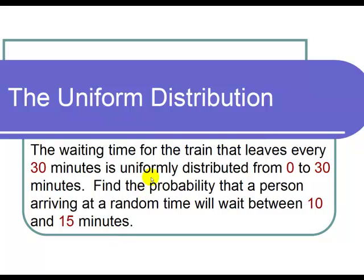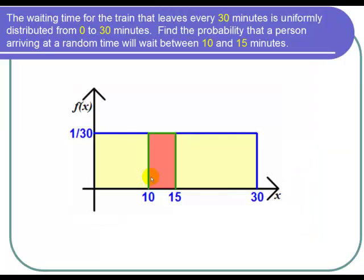We have a uniform distribution. So we always know when we have a uniform distribution, we get a rectangle. The f of x curve is horizontal.